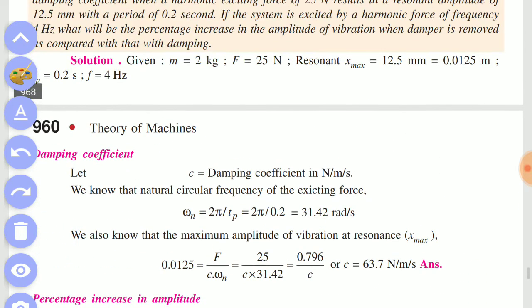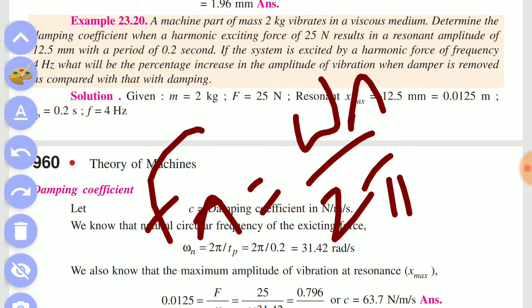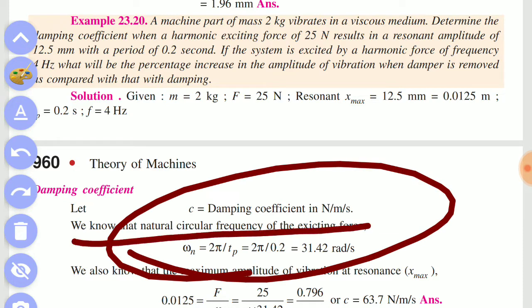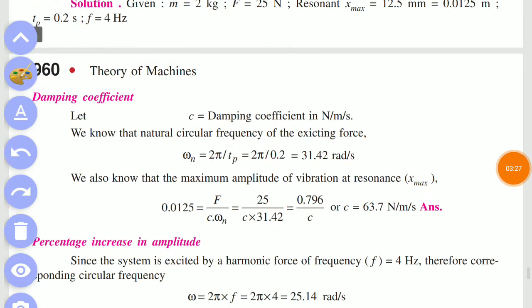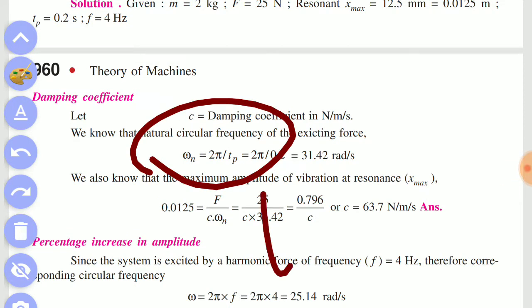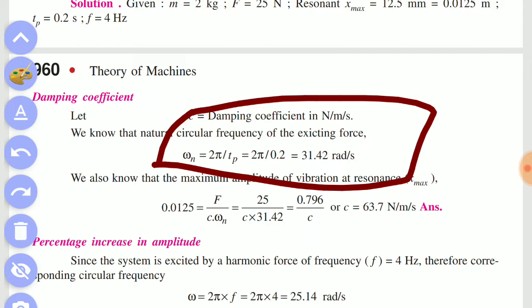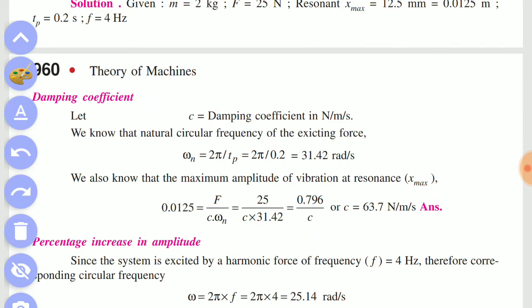We know f_n equals 1 over 2π. The formula is omega equals 2π f. So we will find omega_n equals 2π f_n, the natural circular frequency of the exciting force. Time period t_p equals 2π divided by omega_n. This is the formula. So omega_n equals the square root of k over m. We know m, so we will be able to find c now.